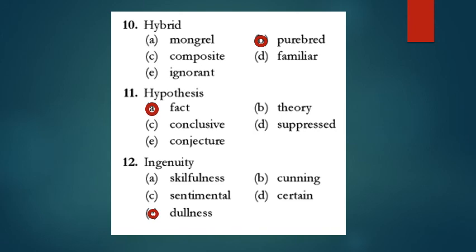Hypothesis - the opposite of that is fact. Conjecture means an imagined thing, your imagination. Ingenuity means quality of being very clever, very skillful, so the opposite will be dullness. Cunning also means clever. Sentimental means very emotional. So the right answer will be dullness.